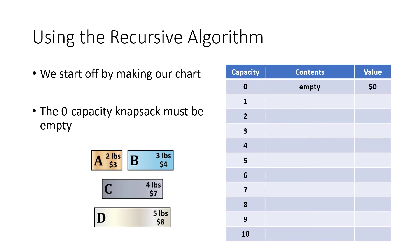Starting from the chart: the best zero-pound knapsack is empty at zero dollars. The best capacity-one knapsack is also empty at zero dollars — the smallest weight we have is two pounds, so there's nothing we can fit in a one-pound capacity. For the capacity-two knapsack, there's only one way to pack it: put an A in it, which is worth three dollars.